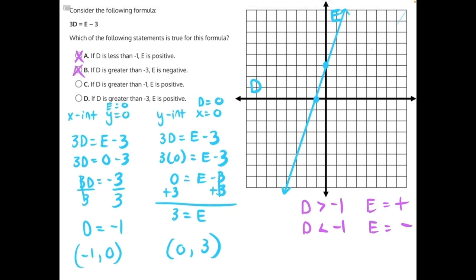C says if D is greater than negative 1, E is positive. Well, we have a statement that says exactly that. When D is greater than negative 1, E is positive. And that is true. This extends in the positive direction into infinity, which means C is our correct answer.